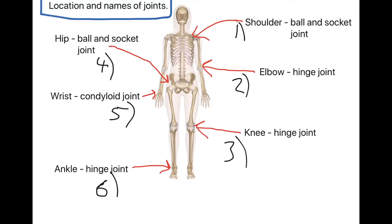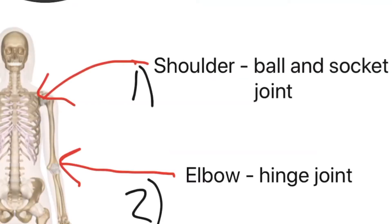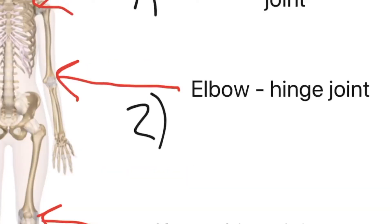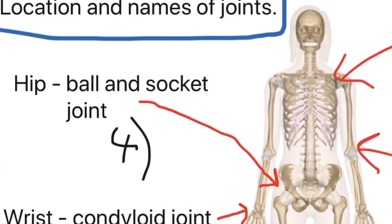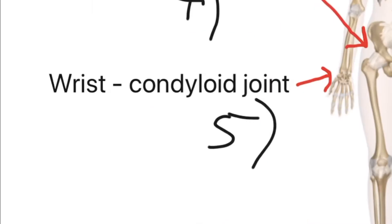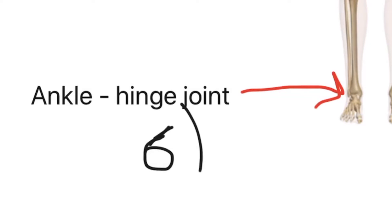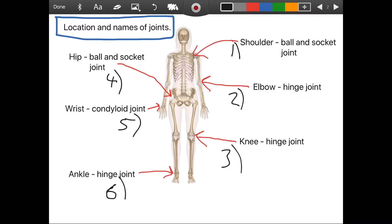Here is the location of the joints. I've numbered them so you know where I'm going. The first is the shoulder joint, a ball and socket joint. Second is the elbow joint, which is a hinge joint. Third is the knee joint, also a hinge joint. Fourth is the hip joint, a ball and socket joint. Fifth is the wrist joint, which is a condyloid joint. And sixth is the ankle joint, which is also known in the A-level specification as a hinge joint — technically it's not, but that's what we're going with.